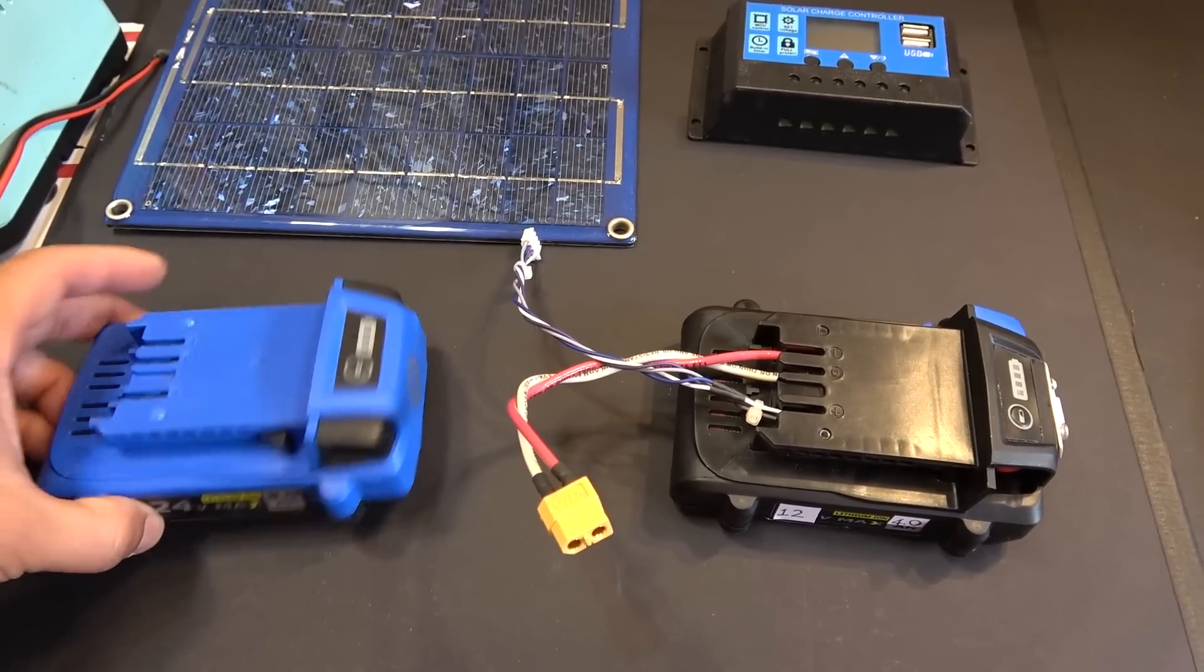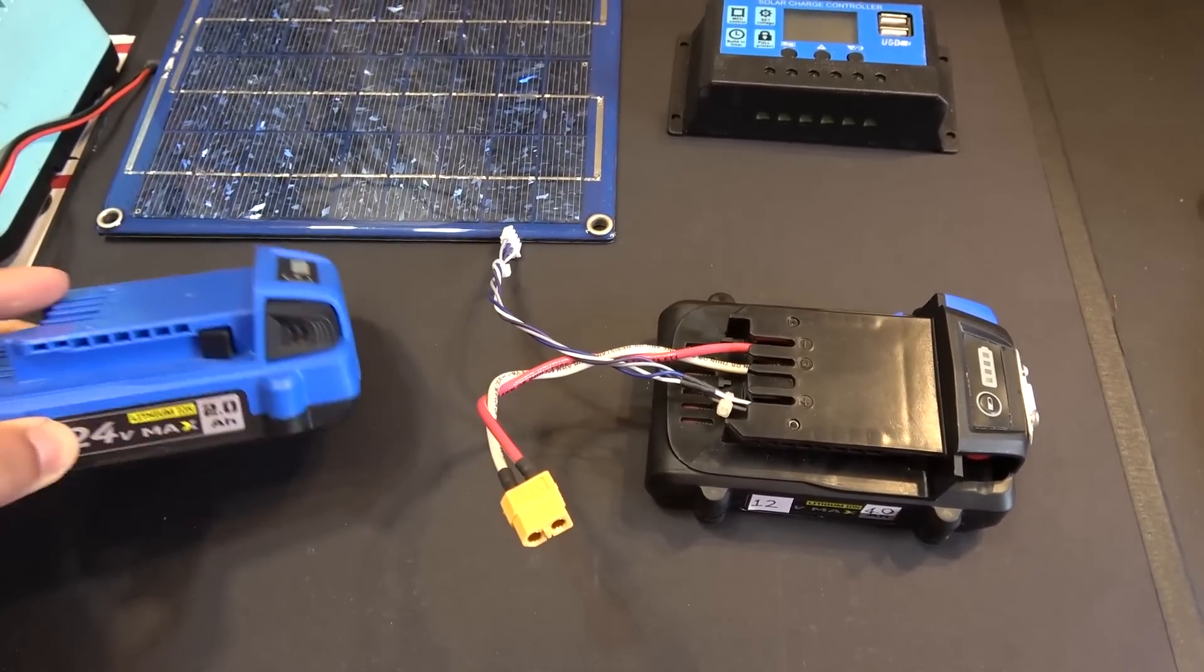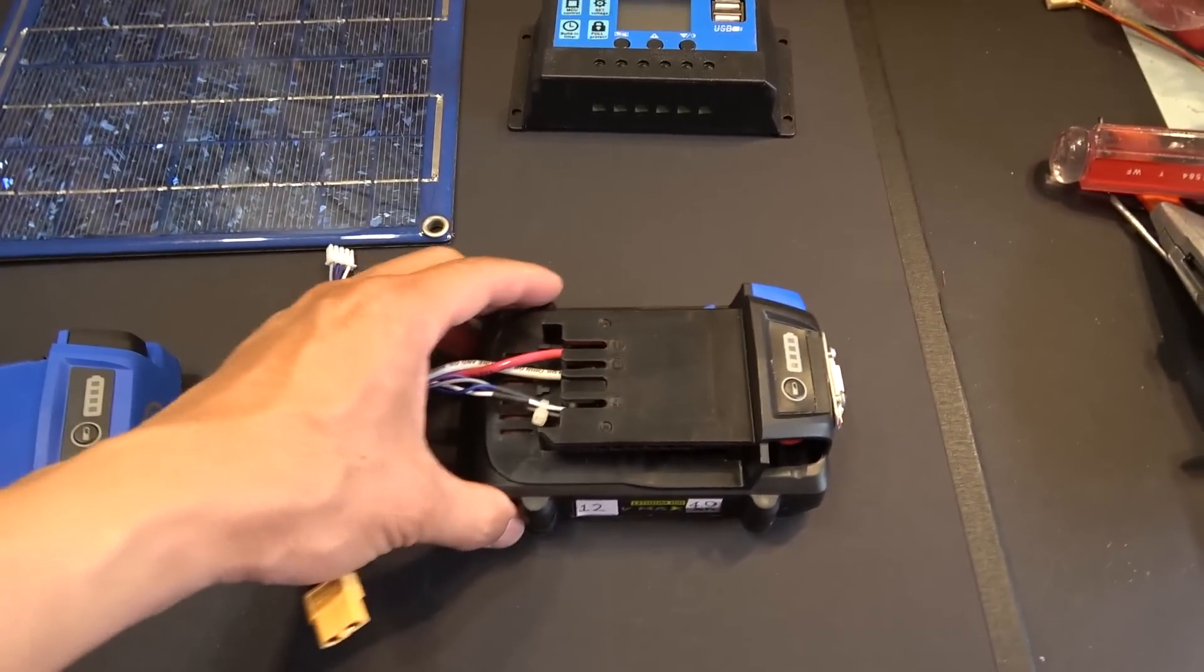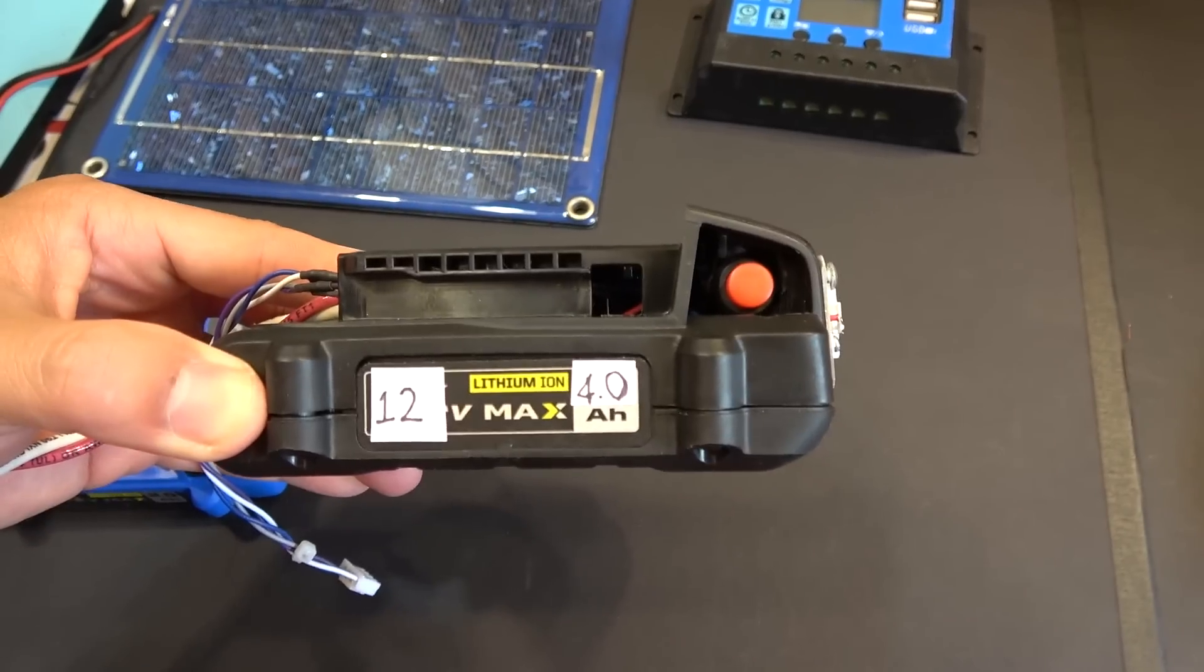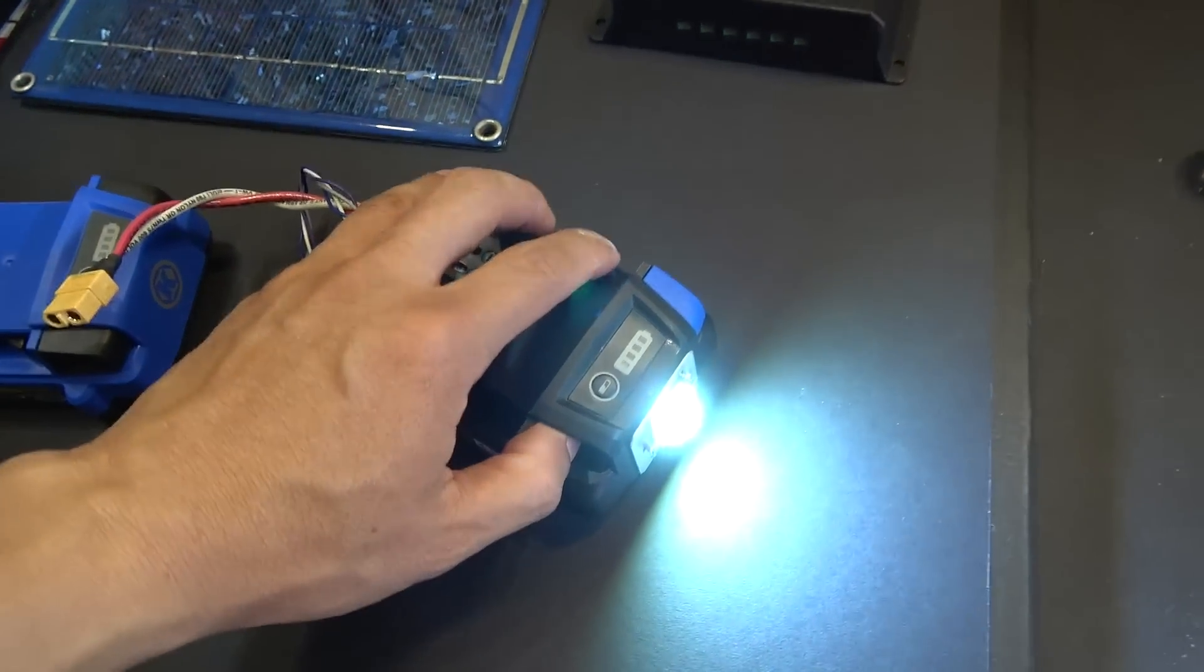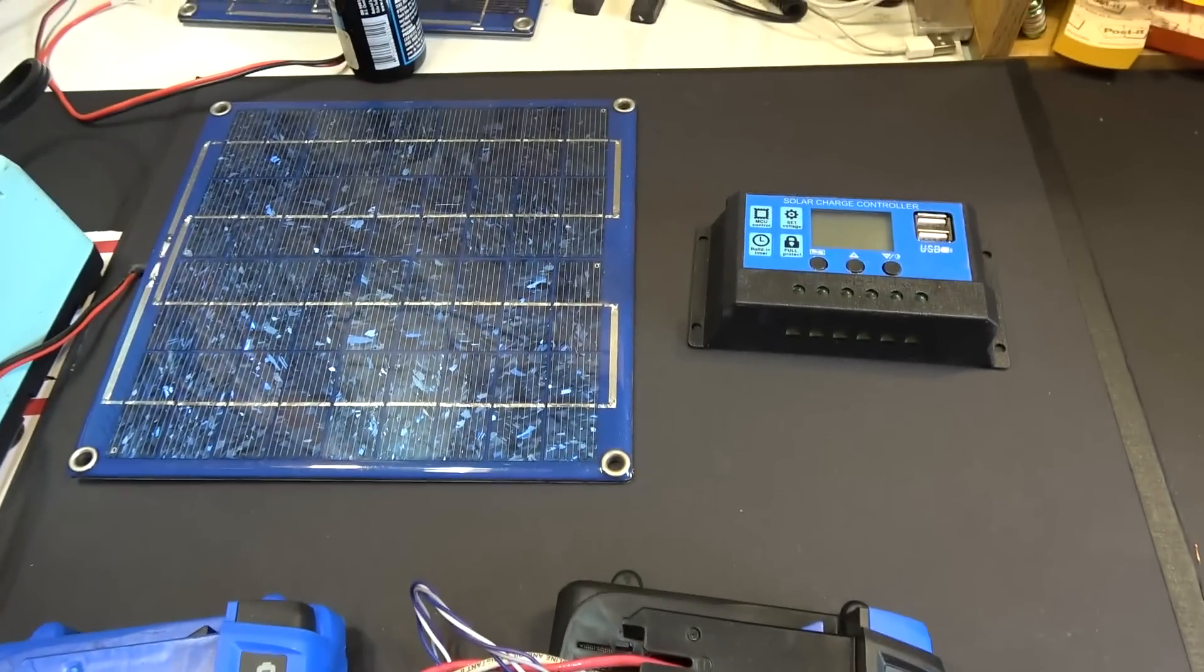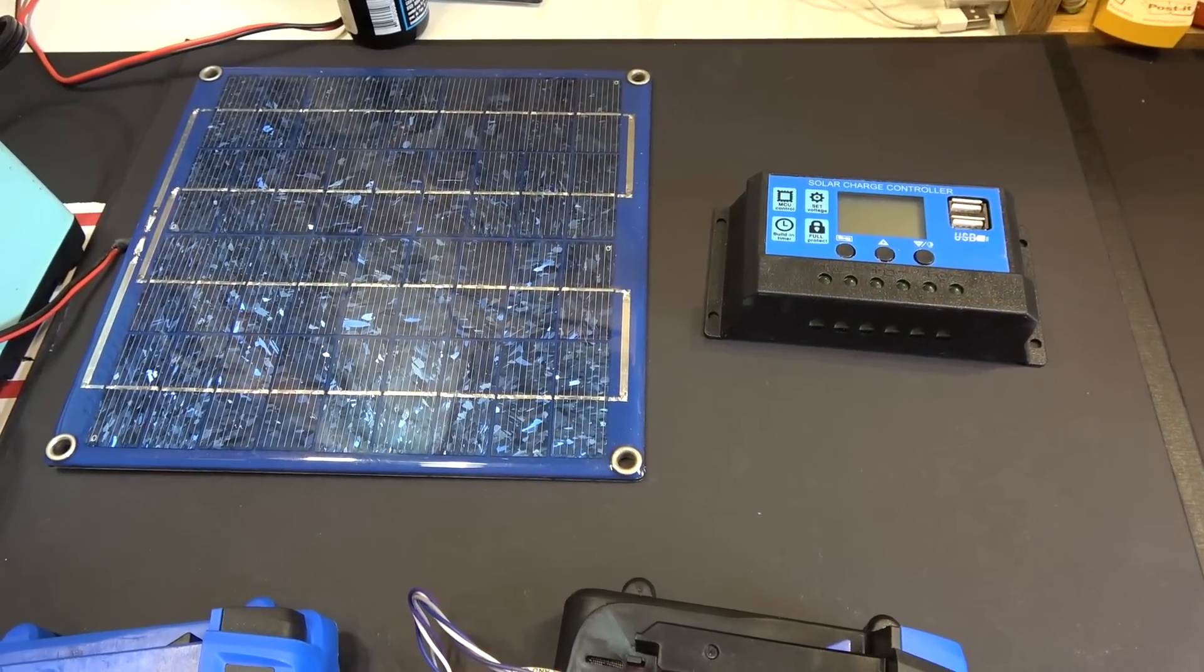Today we'll show you how to convert a 24-volt 2mAh Cobalt power tool battery into a 12-volt 4mAh portable battery that also has a flashlight. You can use it to power a small and portable solar power system.